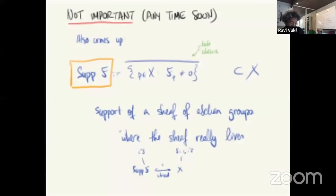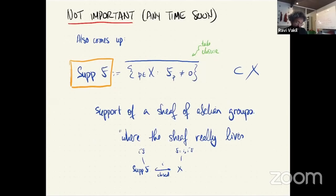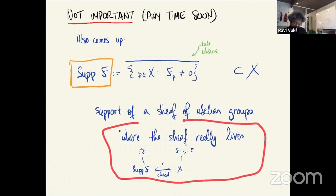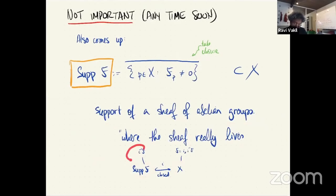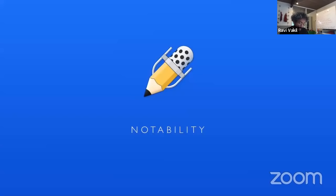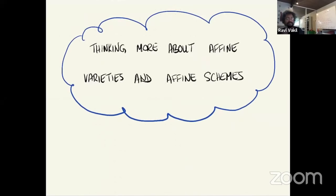There's also a notion of the support of an entire sheaf: you take the locus where all the stalks are not just zero, and take the closure of that — it's a closed set by definition. This is where the germs are not zero, where the sheaf really lives. There's a sheaf on the support and the original sheaf is really the push-forward of the thing living on the support. We won't use this technically soon, but it is important in real life.